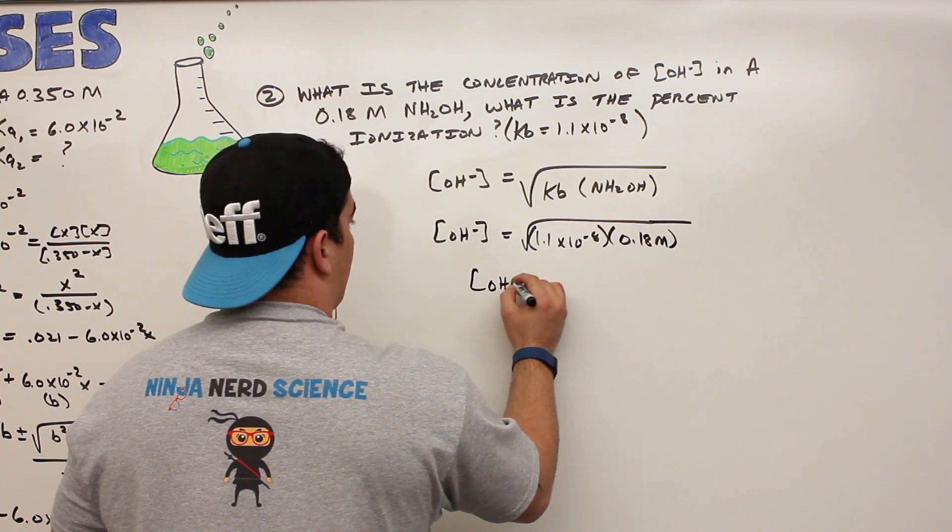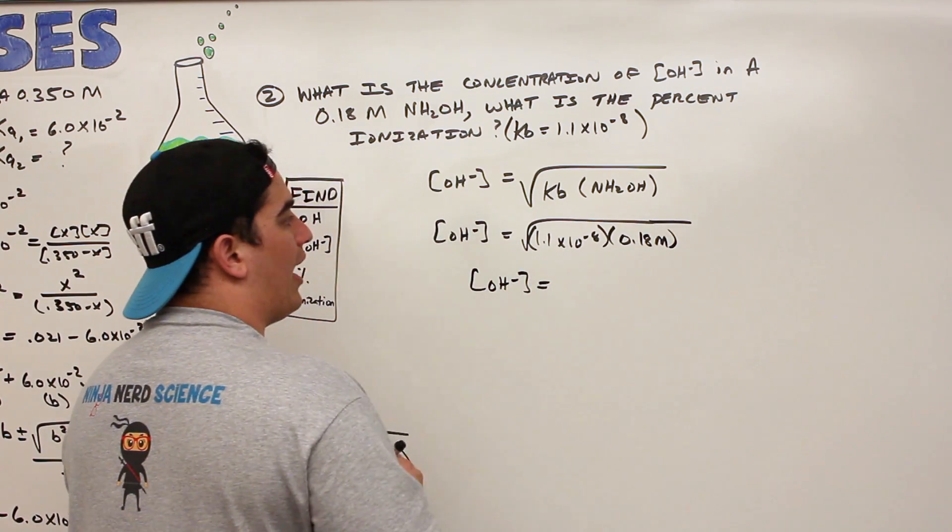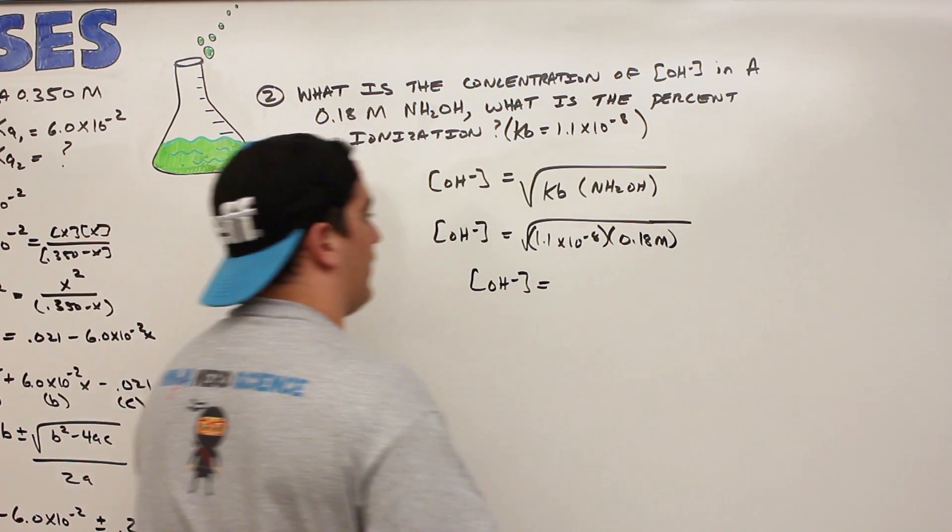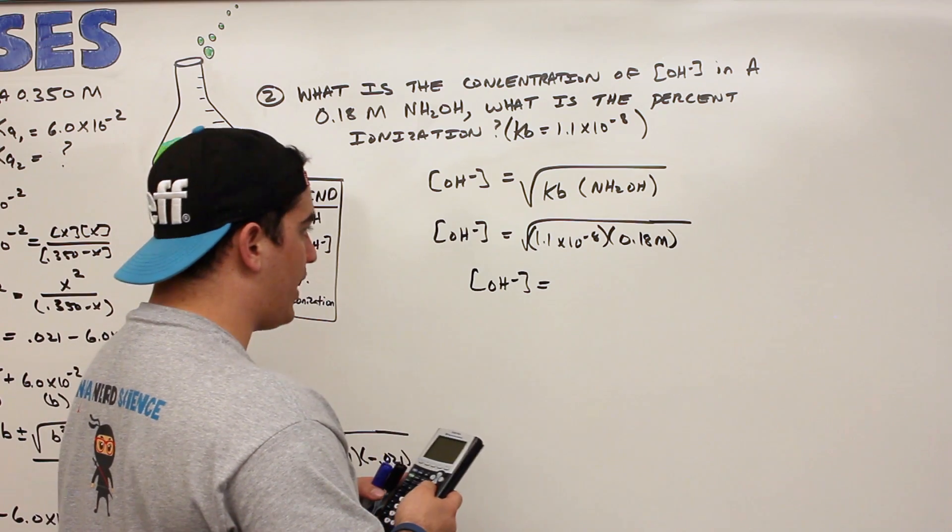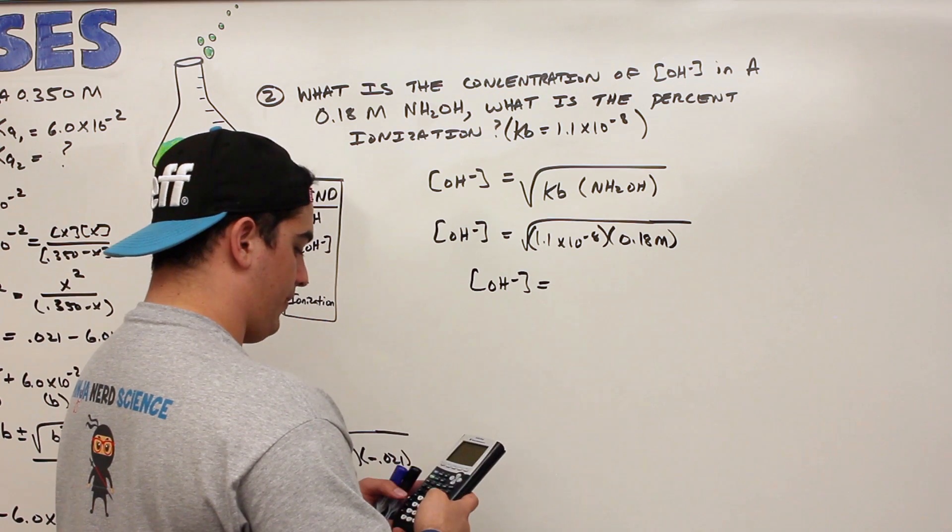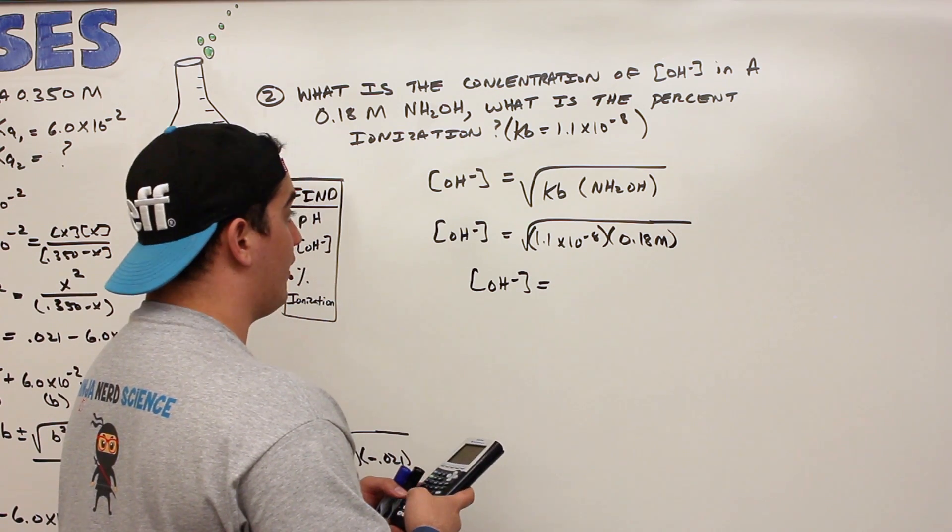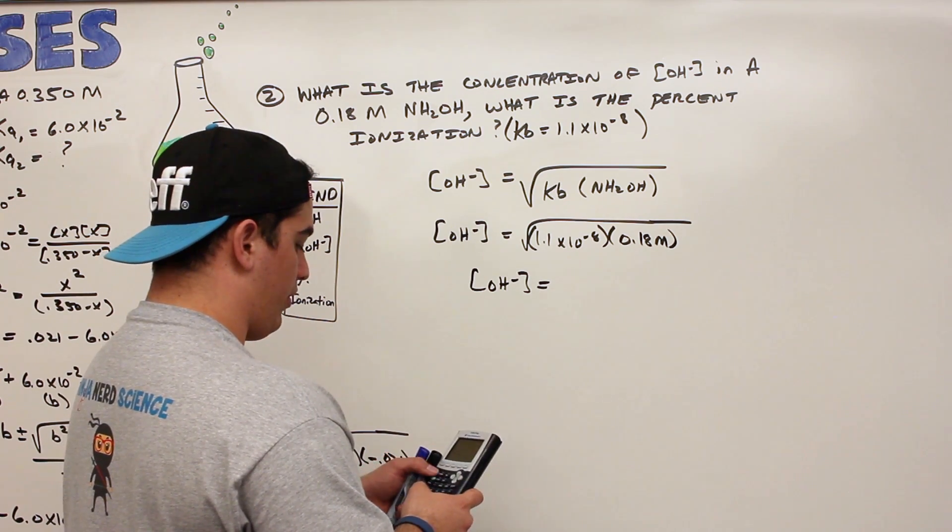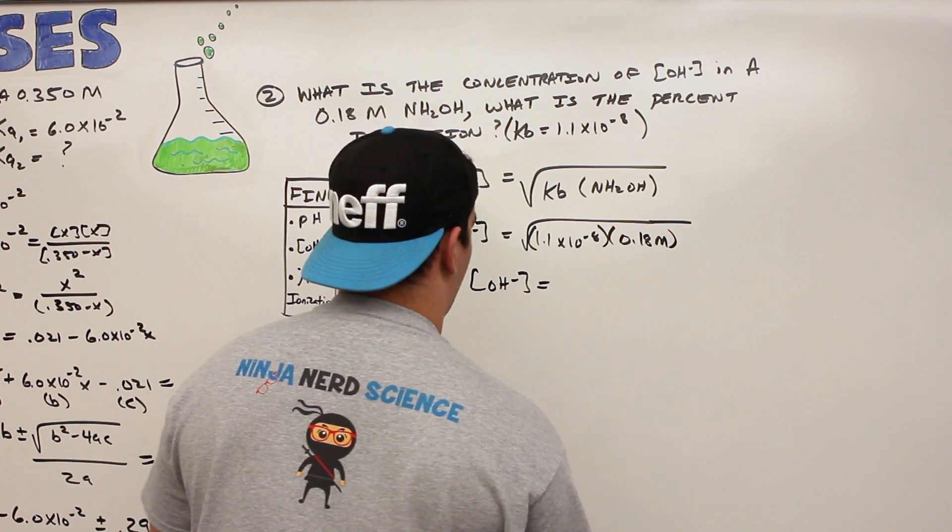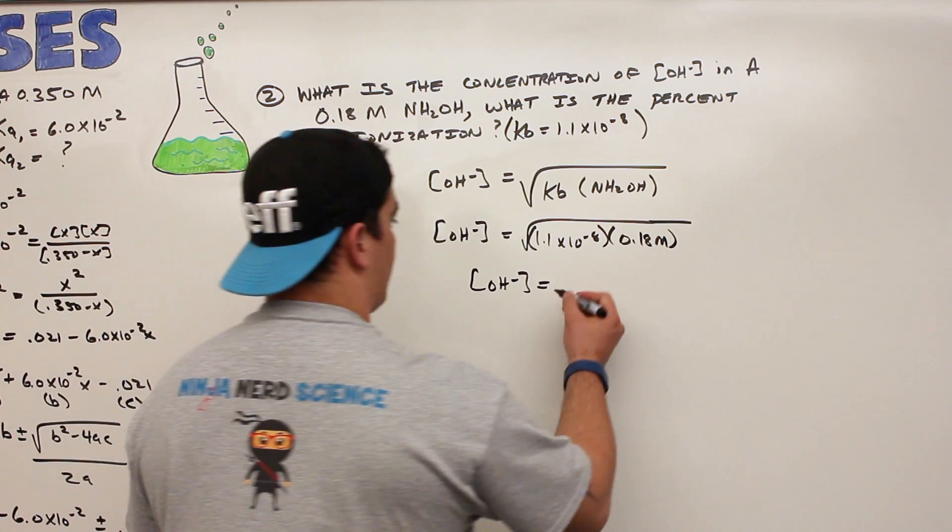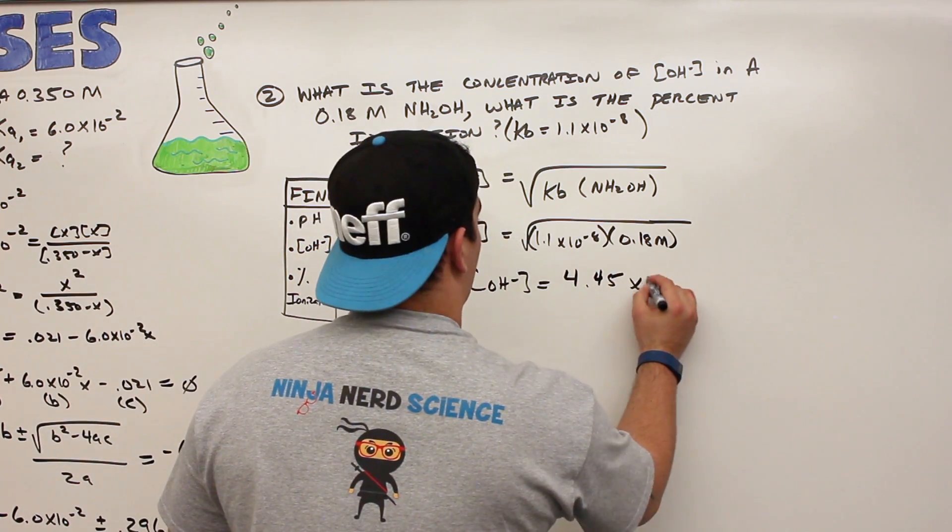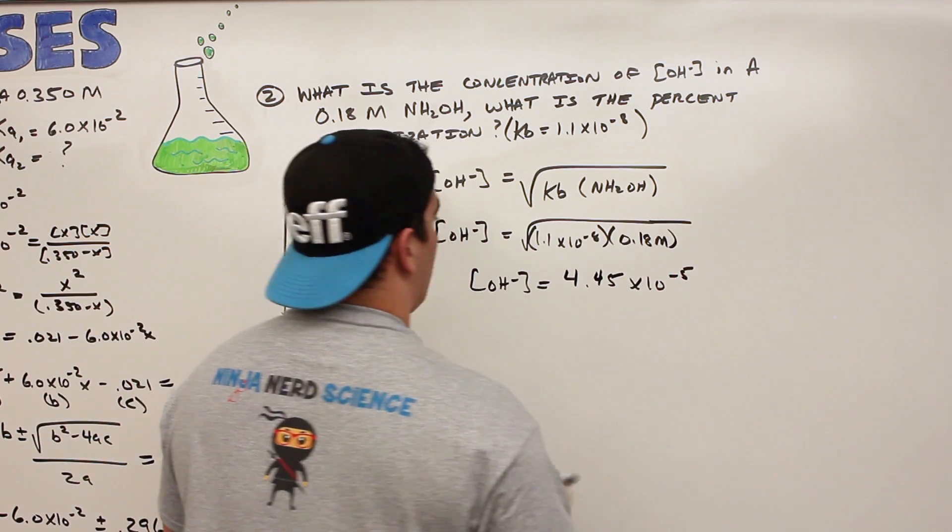Then what do you get? The hydroxide ion concentration is equal to this. And again, why do we assume it's just 0.18? Because we assume that the x is insignificant. So what do we get? 1.1 E negative 8 times 0.18, and then we're going to square root that, and we're going to get 4.45 times 10 to the negative 5. So we get 4.45 times 10 to the negative 5, and this is in molarity. So that's our hydroxide ion concentration.